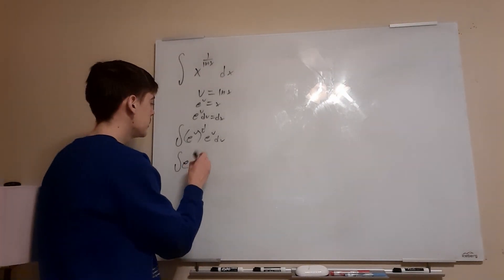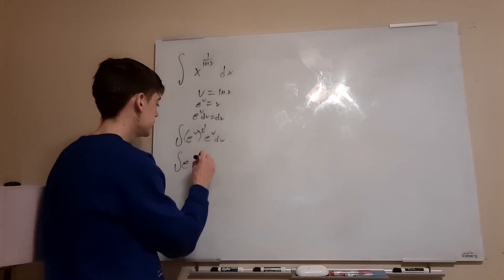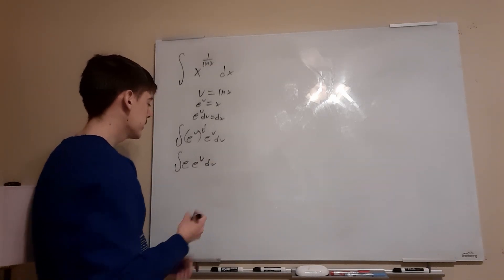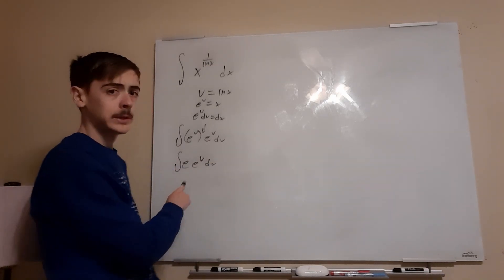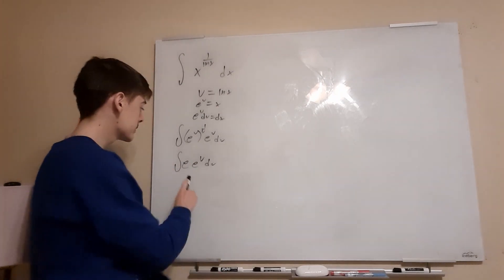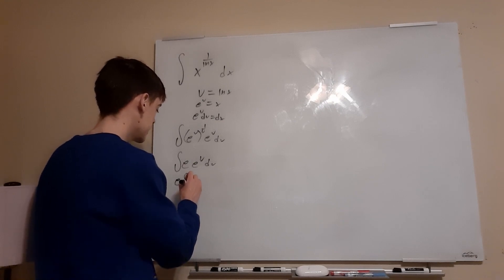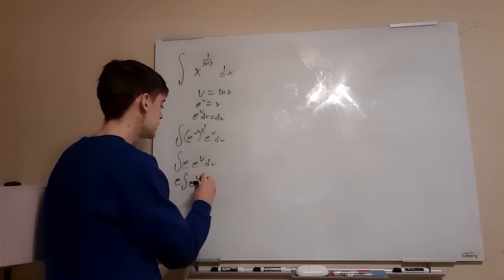And that will again be multiplied by this term right here, which is e to the u du. And there's a few ways you could go from here. The way I did it was, remember, e is still just a number on its own. So this solo e, we could just pull that out of the integral, because it's a constant. And so we're just left with e times the integral of e to the u du.